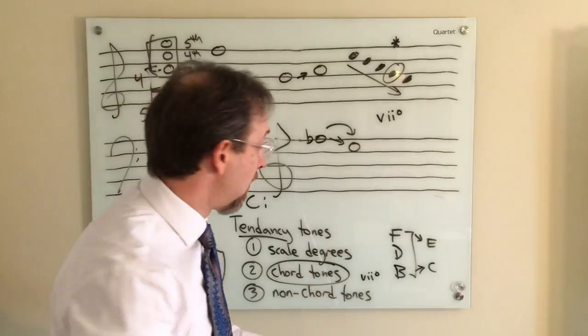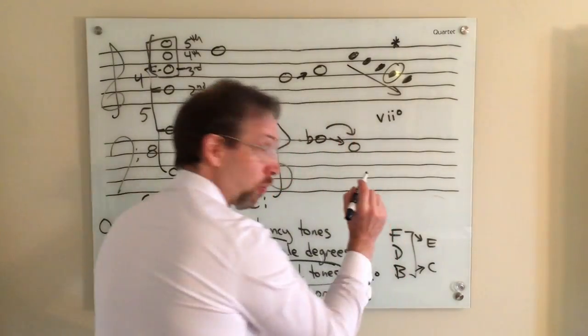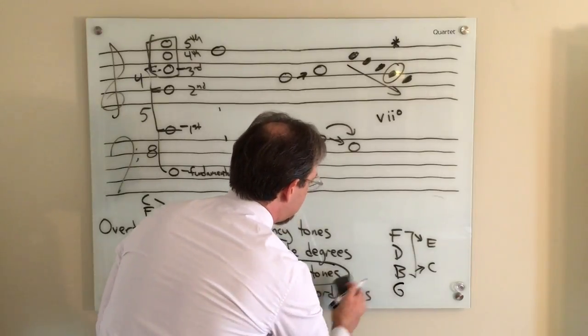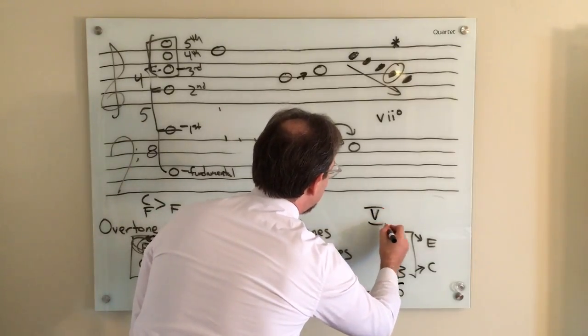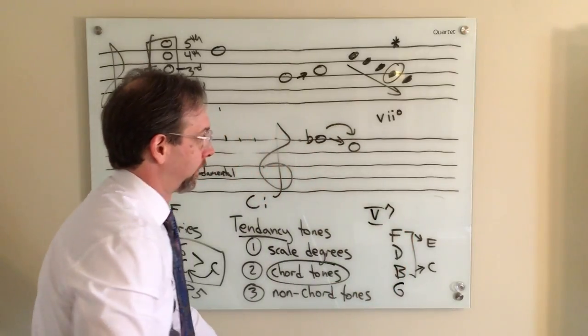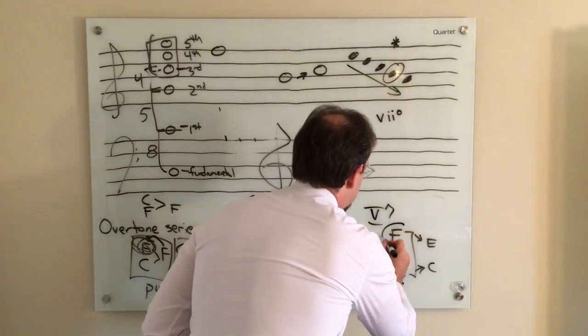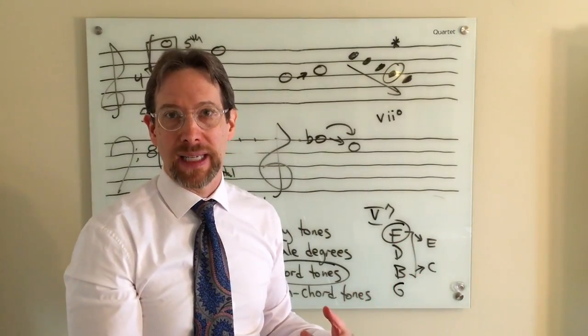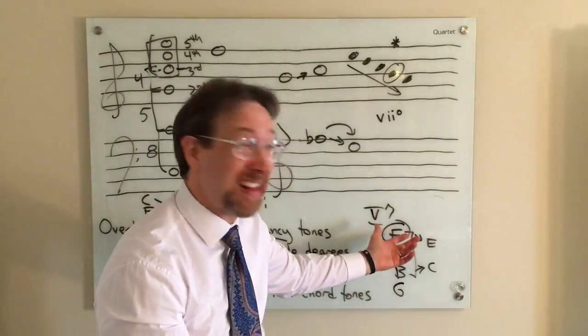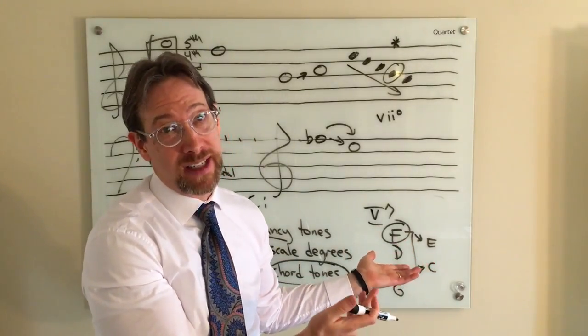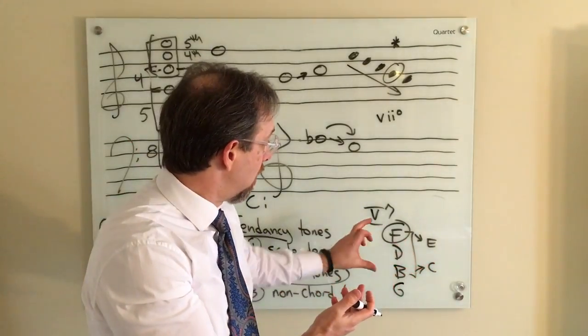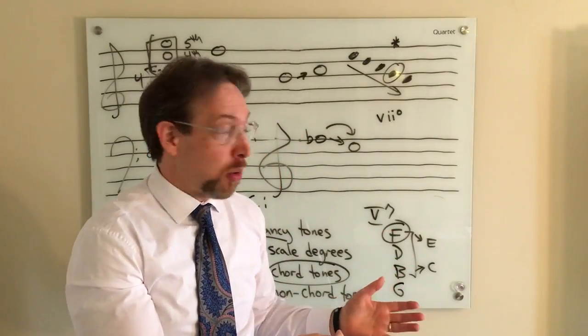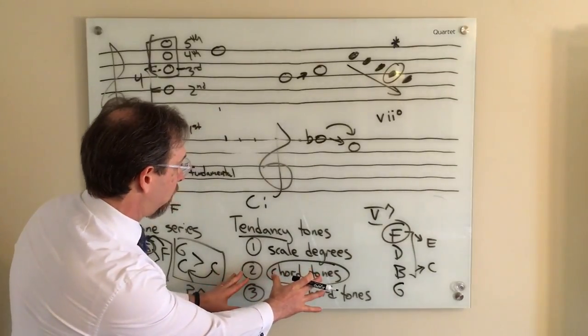And then seventh chords in general, like watch this. Here's my seven diminished. I put a G right underneath it. No longer is it a seven diminished triad. It is now a five seven chord. The seventh of any chord wants to resolve down by step. You'll notice that that's exactly what that same pitch did when it was part of a seven diminished triad. You have that tendency. Sevenths of chords want to resolve down by step. So there's an example of tendency tones there.